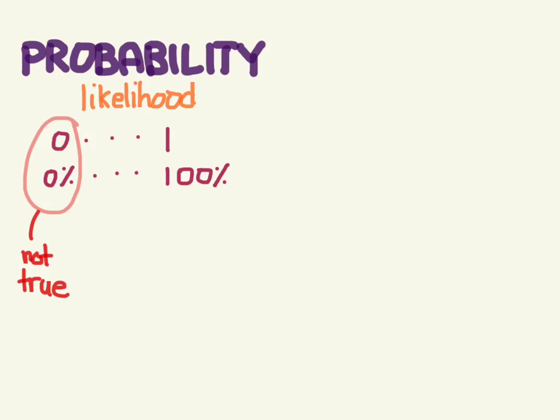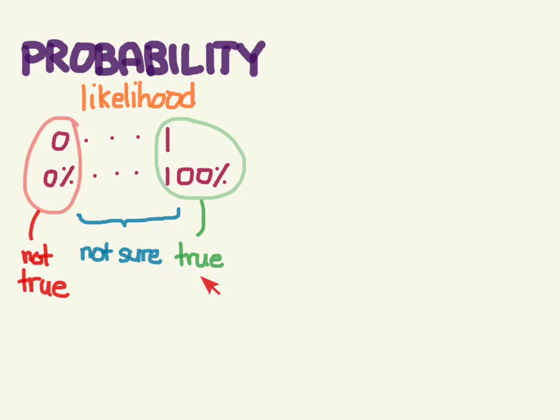0 or 0% means that something is definitely not true or definitely not going to happen. At the other extreme, 1 or 100% is definitely true or definitely going to happen. The things that we're not sure about are here in the middle, with things being closer to true having higher numbers and things being closer to not true having lower numbers.